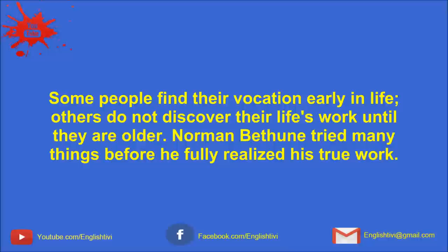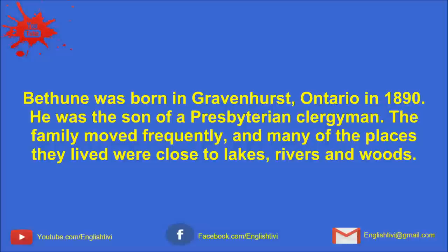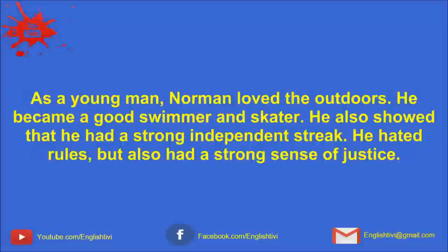Some people find their vocation early in life. Others do not discover their life's work until they are older. Norman Bethune tried many things before he fully recognized his true work. Bethune was born in Gravenhurst, Ontario, in 1890. He was the son of a Presbyterian clergyman. The family moved frequently, and many of the places they lived were close to lakes, rivers, and woods. As a young man, Norman loved the outdoors. He became a good swimmer and skater.